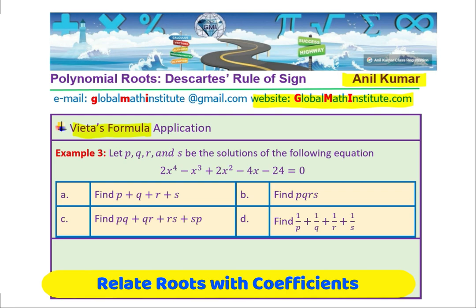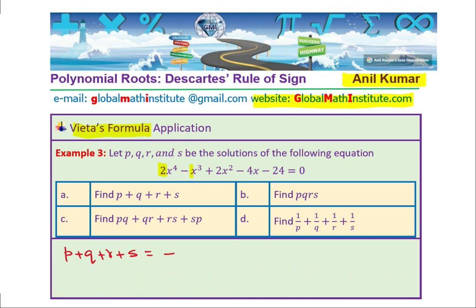Once again, the sum of roots p + q + r + s will be equal to negative of the coefficient of x^3 divided by the leading coefficient. The coefficient of x^3 divided by the leading coefficient 2. In this particular case, the coefficient of x^3 is -1, and when you divide this by 2, you get your answer: -(-1)/2 = 1/2. That is how you can find the sum of these roots, simple as that. That is your part A.